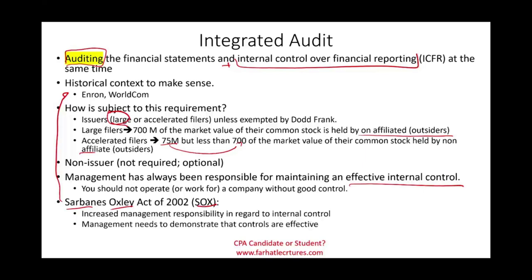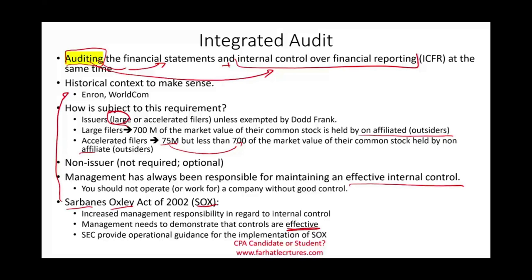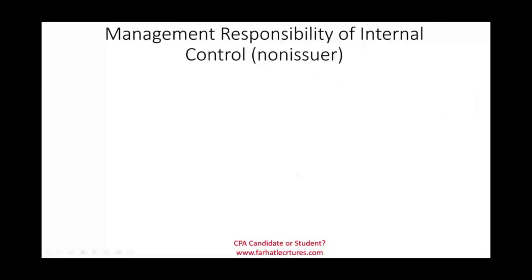Management needs to demonstrate that internal controls are effective. It's no longer enough to have them written down somewhere — now you have to show that they are effective, meaning they are working properly. This is why the auditor will have to audit not only the financial statements, but also internal control over financial reporting. The SEC provides guidance for the implementation of SOX, because they oversee the issuers.